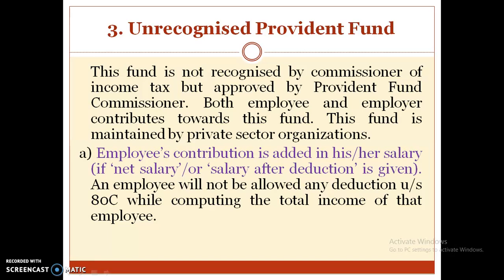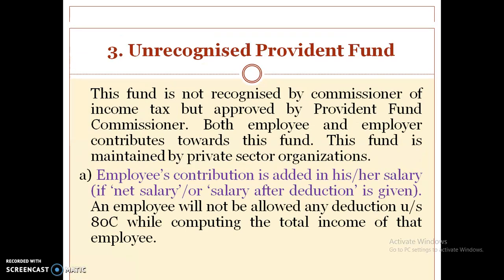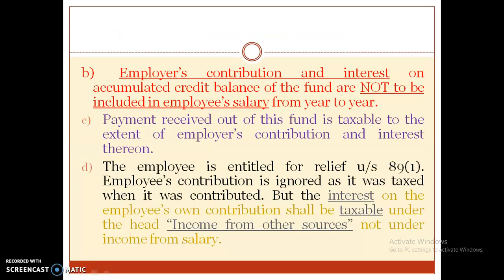The third type is Unrecognized Provident Fund. This fund is not recognized by the Commissioner of Income Tax but is approved by the Provident Fund Commissioner. Both employee and employer contribute towards this fund, and it is maintained by private sector organizations. The employer's contribution and interest on the accumulated credit balance are not included in the employee's salary from year to year. However, payment received out of this fund is taxable to the extent of the employer's contribution and interest thereon.